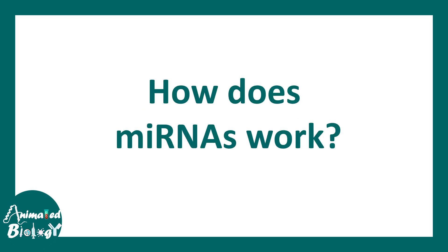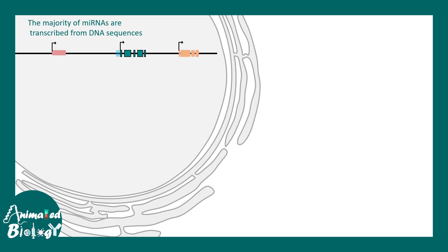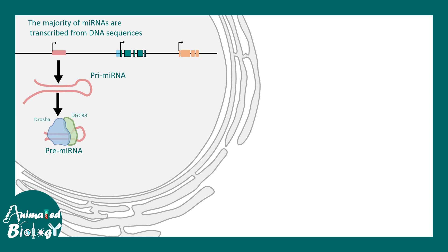First, let's see how micro-RNAs work. There are dedicated genes in our genome for micro-RNAs. These genes don't encode a protein, but they encode a micro-RNA. The first transcript that comes out of these genes is known as the primary micro-RNA transcript.